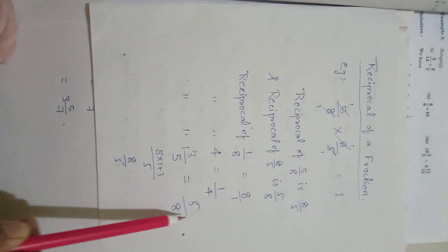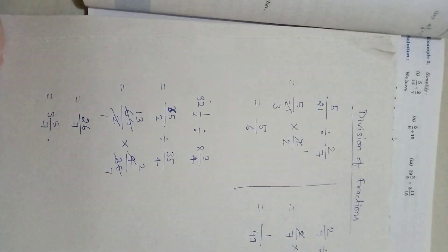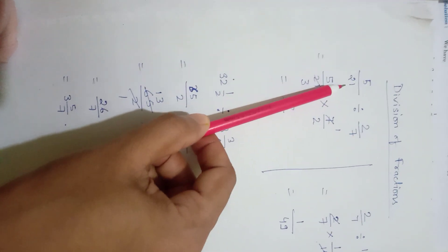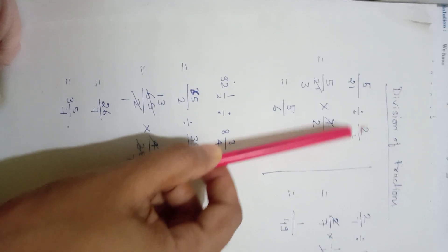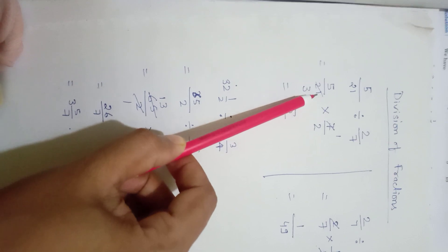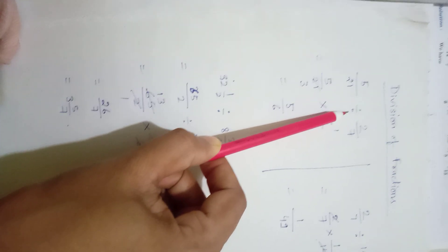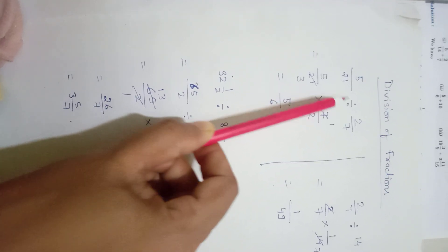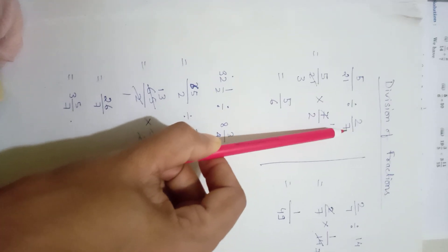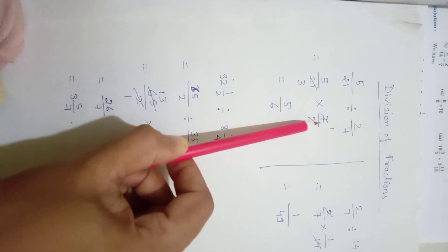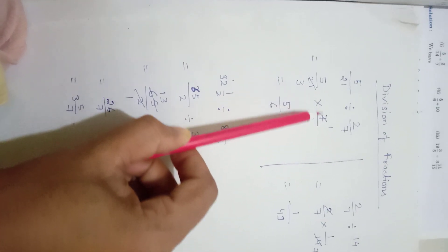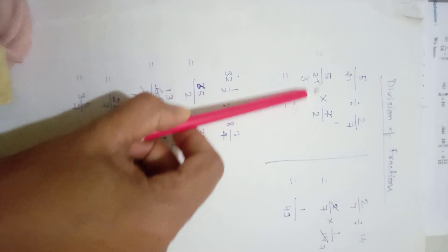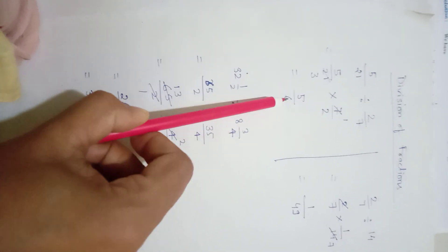Now let's see division of fractions. First example: 5 by 21 divided by 2 by 7. The first fraction is written as it is — 5 by 21. The division sign is changed into a multiplication sign, and when we change it we write the reciprocal of the second fraction, so 2 by 7 becomes 7 by 2. Now we cancel: 7 and 21 cancel to give 7 and 3. Then we multiply: 5 by 1 gives 5, and 3 by 2 gives 6. The answer is 5 by 6.